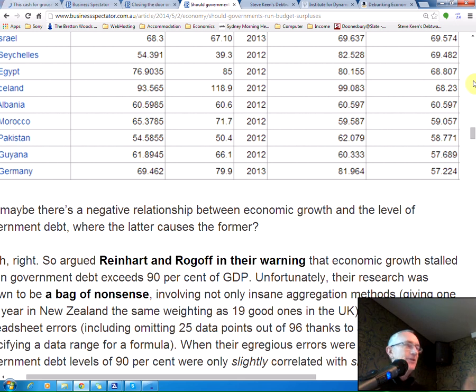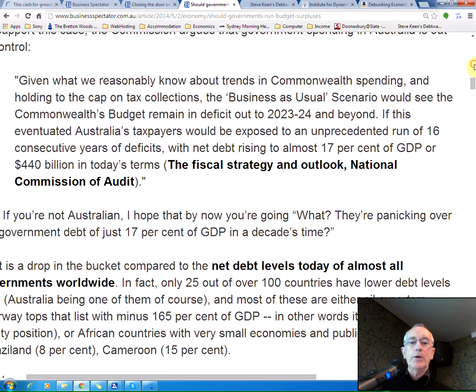You have to go down a hell of a long way before you find an absolute basket case of an economy called Germany that has a net debt level six times the level we currently have. So something is wrong with the analysis if it says we should be having a lower net debt level. If you take a look at the tone of the language in the audit document, what it basically says is if we don't fix things up now, then in 10 years' time our debt level is going to be 16% of GDP.